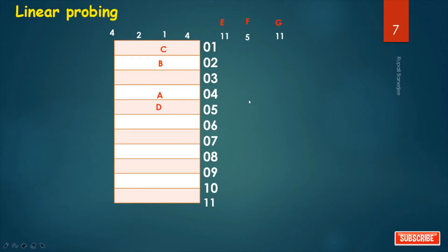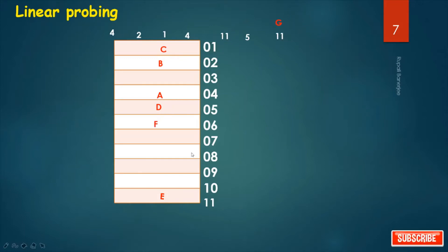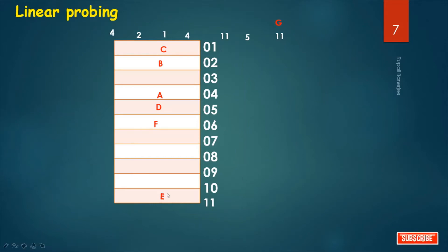Next, E goes to location 11. F maps to location 5, but location 5 is already occupied, so we search for the next empty bucket, which is location 6 — so F is placed at location 6. G maps to location 11, but location 11 is already occupied by E. Since the table is circular, the next empty bucket after 11 is location 3 — so G is placed at location 3.